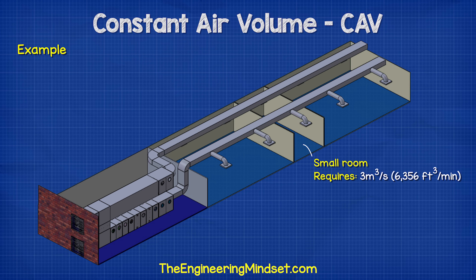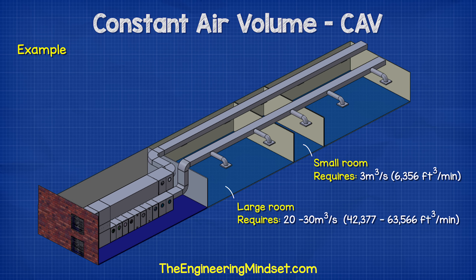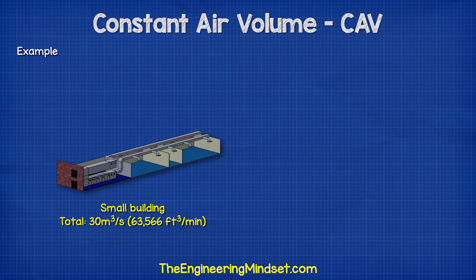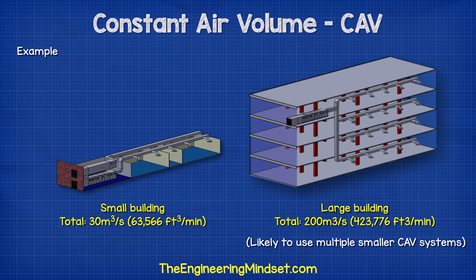For example, this small room in the centre might require just 3 cubic metres per second or 6,300 cubic feet per minute, whereas these two larger rooms on either side might require 20 to 30 cubic metres or 42,000 to 63,000 cubic feet per minute. The size of the ductwork, the damper and the AHU fan will let us achieve this. The total system flow rate depends on the size of the building. Perhaps a small building only requires a small flow rate of 30 cubic metres per second or 63,000 cubic feet per minute, but it could be an old 40-storey building with an enormous AHU on the roof pushing air down through the entire building.